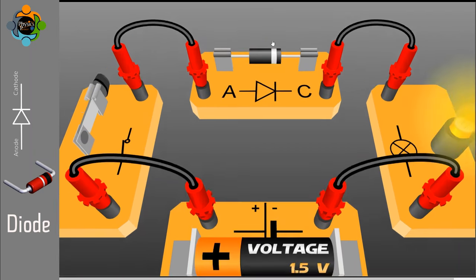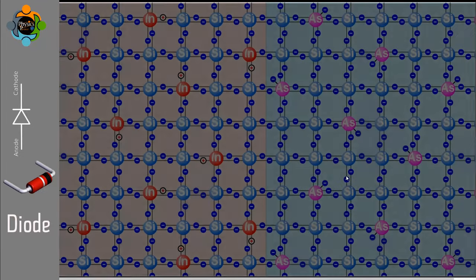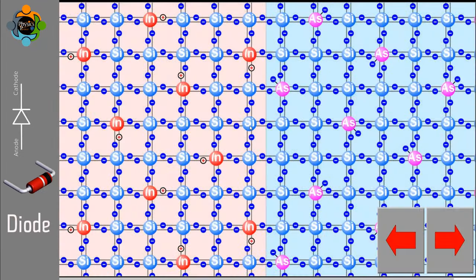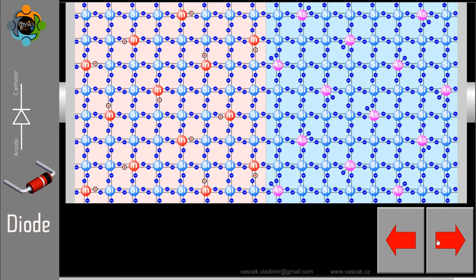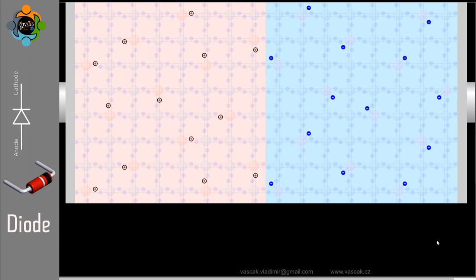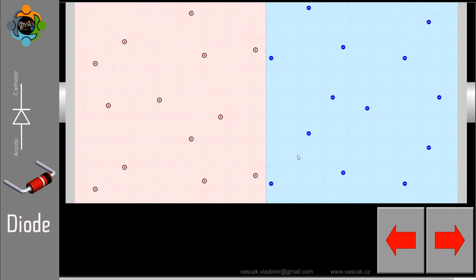Now let's discuss how diodes are manufactured. Arsenic and indium are added to silicon during diode preparation as dopants to create n-type and p-type semiconductor regions respectively. Arsenic introduces extra electrons making the material n-type, while indium introduces deficiency of electrons creating a p-type region.